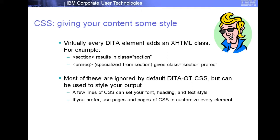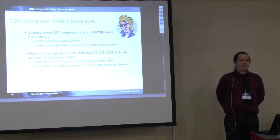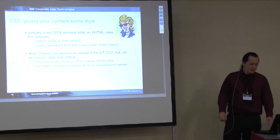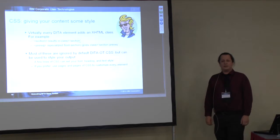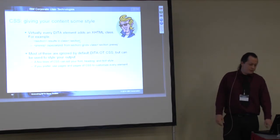In XHTML, pretty much every content element that maps to an HTML element adds a class value. We don't use most of those classes in our default CSS, but they're there for you. If you want to make all paragraphs red, you can hook into that style. If you want to make them blink, your users will be very upset with you. But you can. This means that you can add just a few lines of CSS and really drastically change the look and feel of your HTML output.